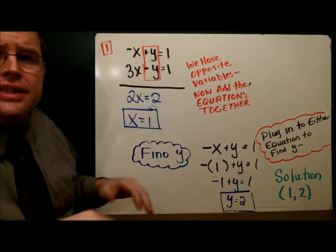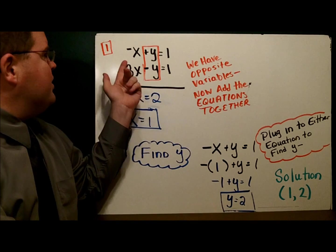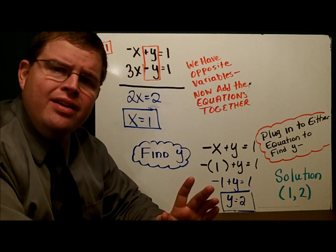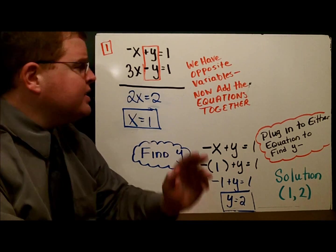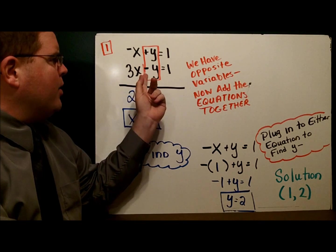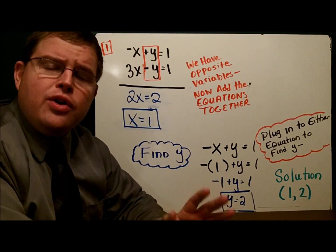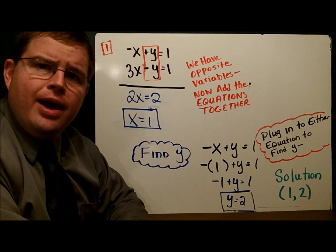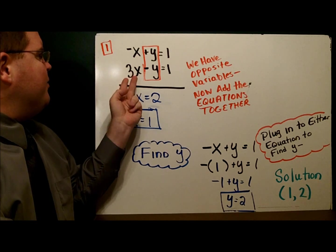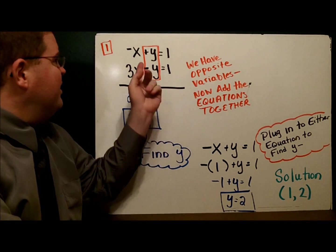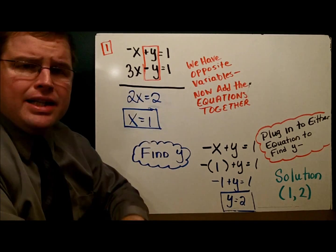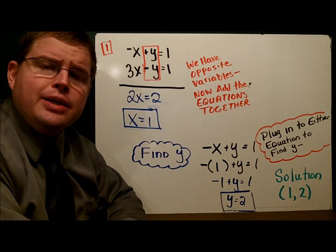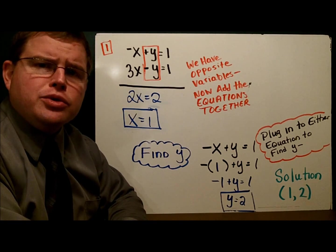In our first example, this is actually set up nicely for us. Notice both of our equations are in standard form already. The next step is to make sure we have opposite variables. Notice here I have positive 1y and here I have negative 1y. Those are opposites. So once I have those opposites, I add everything else together. Negative 1 plus 3 is 2x, positive 1y minus 1y, no y's left, 1 plus 1 is 2. So I have 2x equals 2, I solve that and get x equals 1.